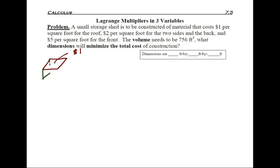There are three different pricings on this box. For the top or the roof, I'll use red, and that is $1 per square foot. For the two sides and the back, that is green, and that's $2 per square foot. For the front, it's aqua, and that is $5 per square foot. The question asks for the dimensions to minimize the total cost, so we label the variables in the picture: length x, width y, and height z.